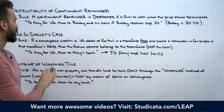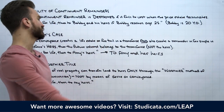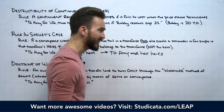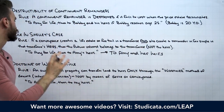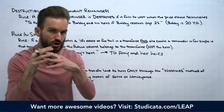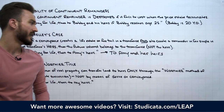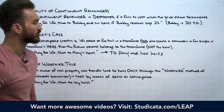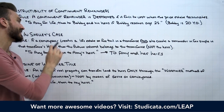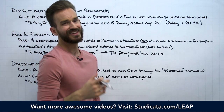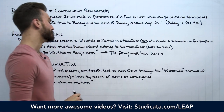To summarize the rule in Shelley's case: you're really just looking for two elements — one instrument creating a life estate or fee tail in a transferee, and at the same time creating a remainder in fee simple in the transferee's heirs. Then you get the merger, and the transferee — Amy here — ends up with fee simple absolute. This is a common law doctrine that's been largely abolished and will not apply today in most jurisdictions.